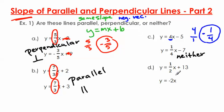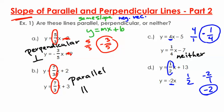Jumping down to d: y equals 1 over 2x plus 13, and y equals negative 2x. These slopes are not the same, so it's not parallel. The slope of the first equation is 1 over 2. The negative reciprocal of 1 over 2 is negative 2 over 1, which is just negative 2. That matches the slope of the second equation. Since these slopes are negative reciprocals, these two lines are perpendicular to each other. I'll use the upside-down capital T symbol for perpendicular.